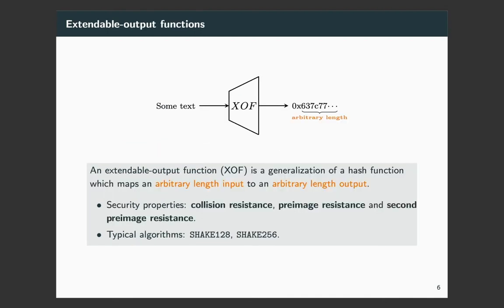The last one is the extendable output functions. An XOF is a generalization of a hash function which maps an arbitrary length input to an arbitrary length output. An XOF can also be used as a classical hash function by setting the output length fixed. A good XOF has to satisfy the security notions such as collision resistance, preimage resistance, and second preimage resistance. There are not too many XOF algorithms. The typical ones are SHAKE-128 and SHAKE-256. They are defined in the SHA-3 standard and later will use them to build concrete instances.